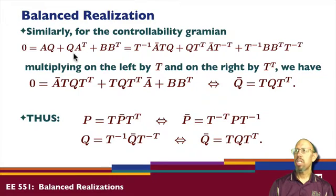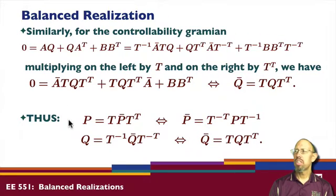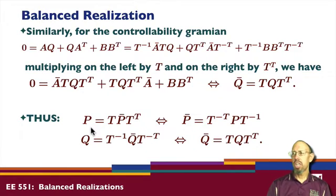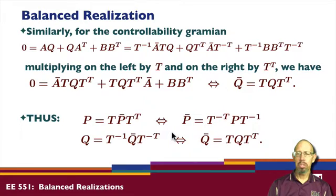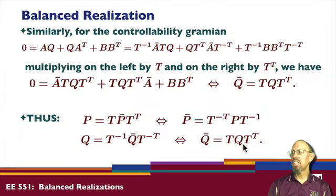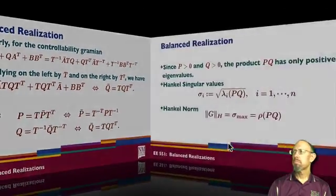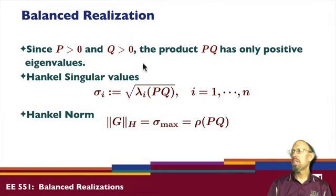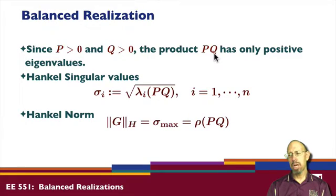You can do it either way — you can start with the original gramian and end up with a gramian in the new coordinates, or start with a gramian in the new coordinates and end up with something in the original coordinates. The important thing is that the new gramians can be expressed in terms of the old gramians by these relationships. Now we want to find a T that will do something special. Since Q is positive definite and P is positive definite, the product PQ is not in general symmetric.